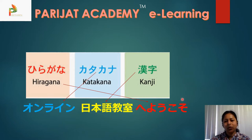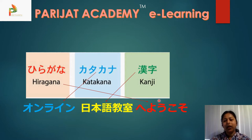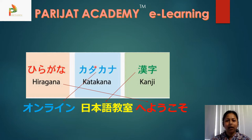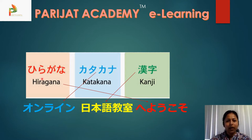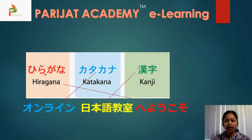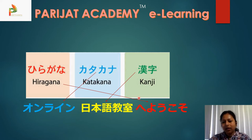Let us take an example: 'onrain nihongo kyoshitsue yookoso.' In this sentence, the last five characters are hiragana, the first five characters are katakana, and the middle part — these are kanjis. Kanjis are pictorial representations borrowed from the Chinese language.